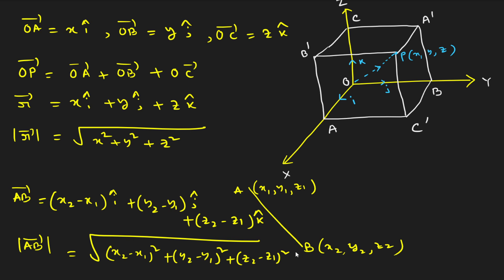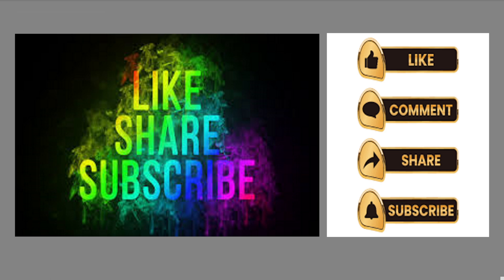So today we learned: what is the Cartesian coordinate system, position vector, position vector of endpoints, and components of a vector in two and three dimensions. These are all very important for solving examples. In the next lecture we will learn the different operations on vector algebra, and after that we will solve some examples. Thank you very much for watching — please share with your friends so others can benefit too.